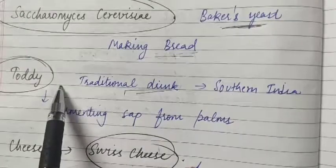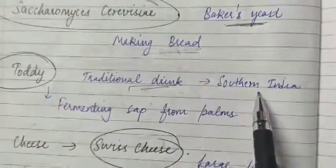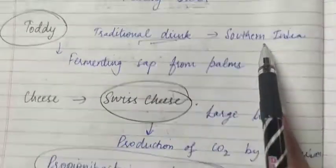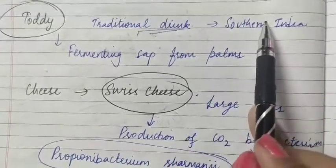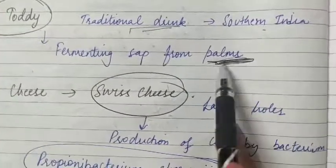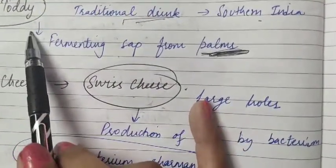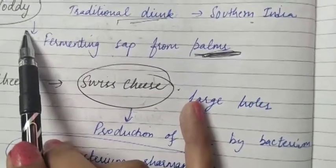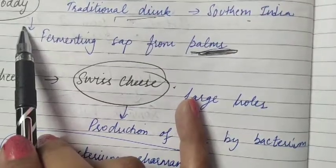For many traditional drinks and food, we also use fermented microbes. Toddy is a traditional drink in Southern India, made by fermenting sap from palms. Microbes are also used to ferment fish, soya bean, and bamboo shoots.